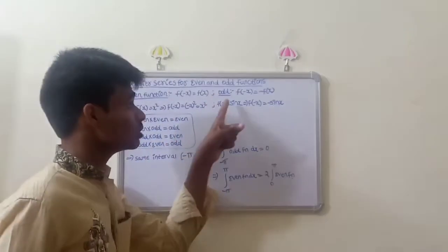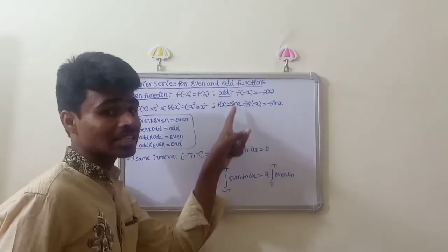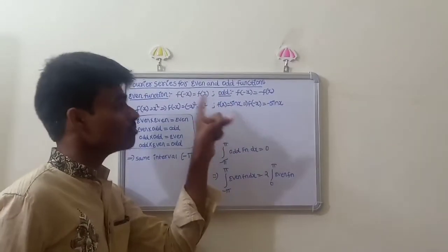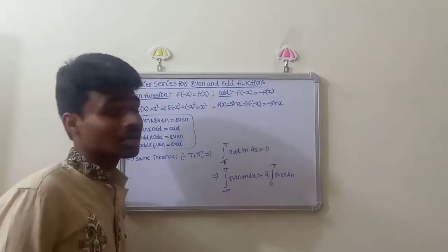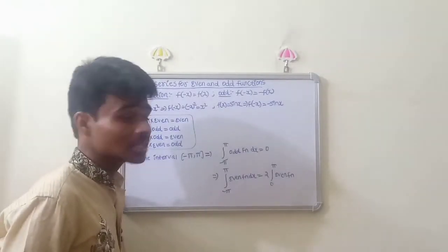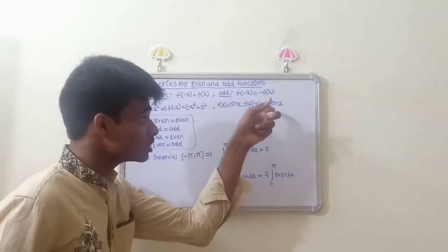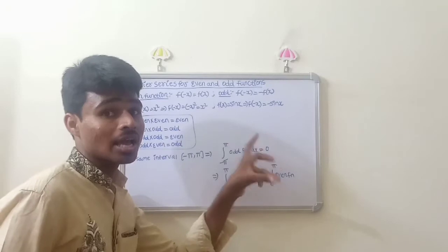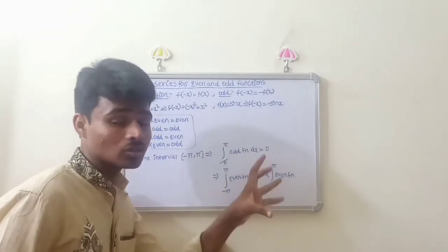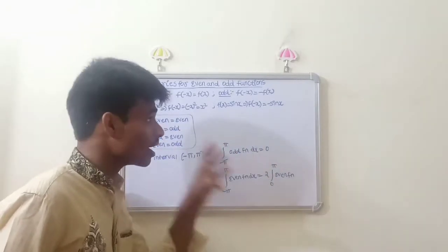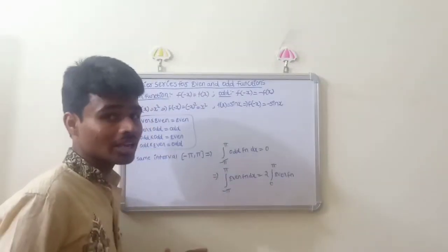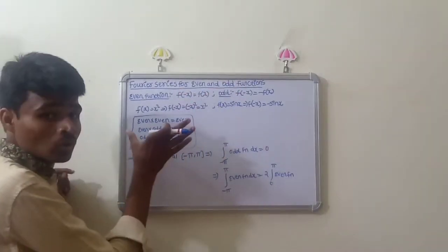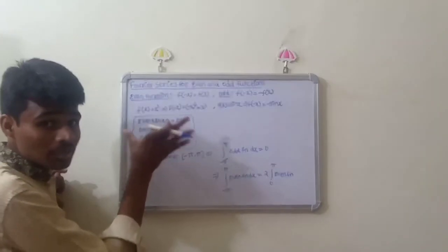An example of an odd function is f of x equals sin x. f of minus x is equal to sin of minus x, which equals minus sin x, which equals minus f of x. So this confirms sin x is an odd function. Even function into even function gives an even function.